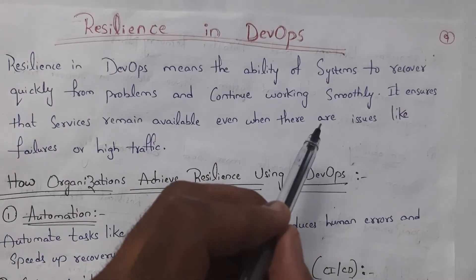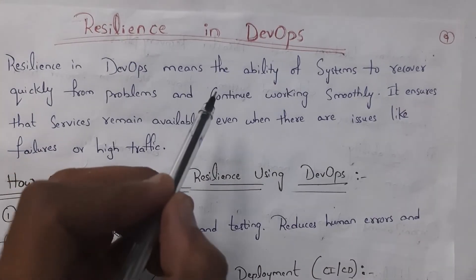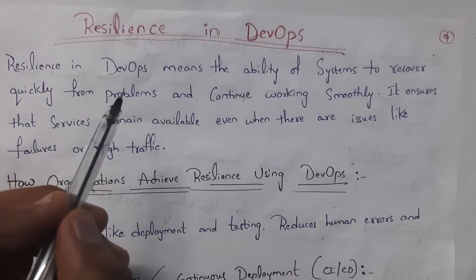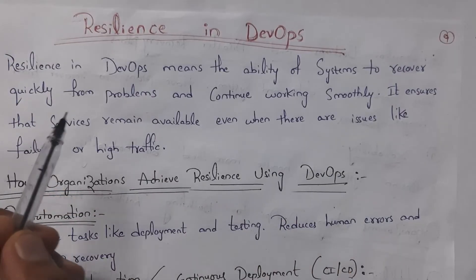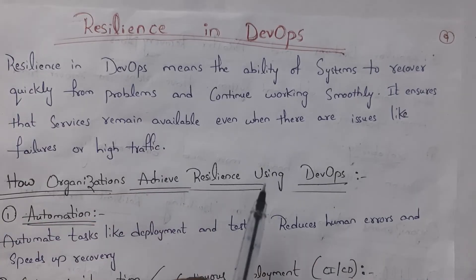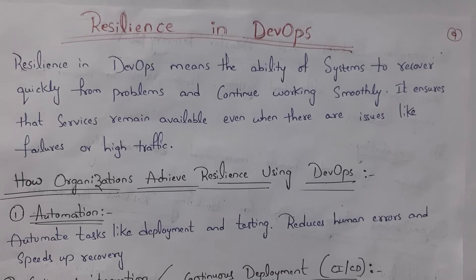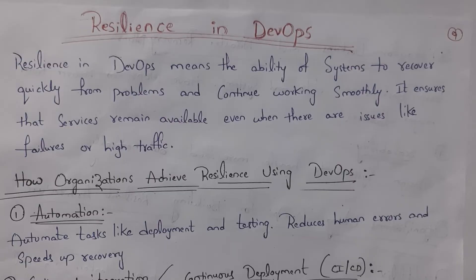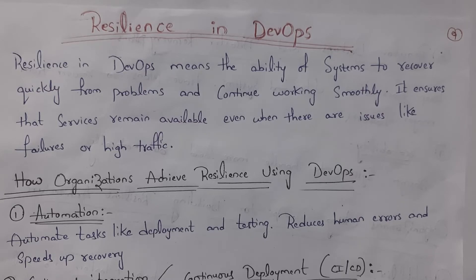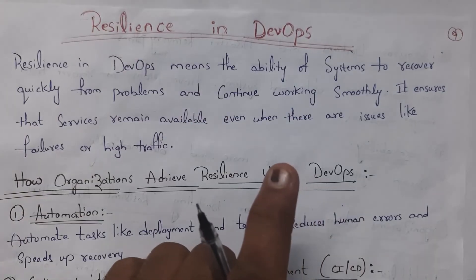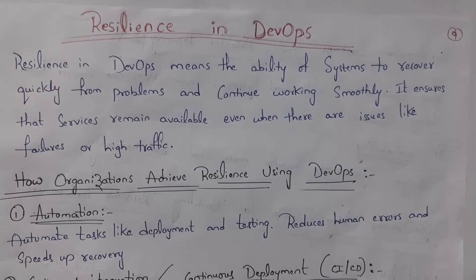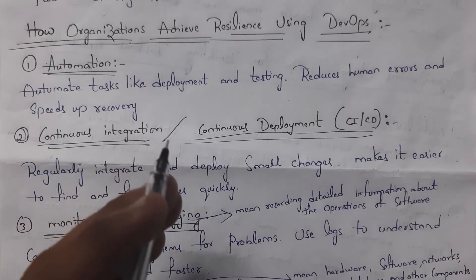Next I will explain resilience in DevOps. Resilience in DevOps means the ability of a system to recover quickly from problems and continue working smoothly. It ensures that services remain available even when there are issues like failures or high traffic. For example, Amazon website is always available and can recover very quickly from any problem — this is because Amazon achieved resilience by following DevOps. Similarly, Google services like Google Search and Gmail are always available because Google achieved resilience using DevOps.